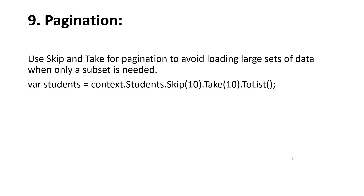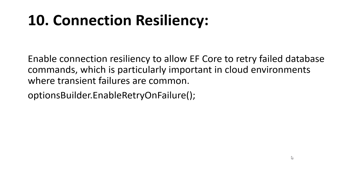The ninth tip is pagination. Use Skip and Take for pagination to avoid loading large sets of data when only a subset is needed. The tenth tip is connection resiliency — enable connection resiliency to allow EF Core to retry failed database commands, which is particularly important in cloud environments where transient failures are common. Use options.EnableRetryOnFailure() to configure this.